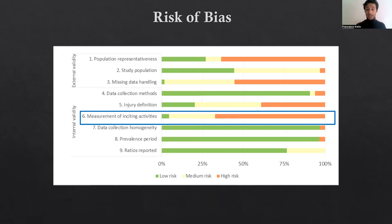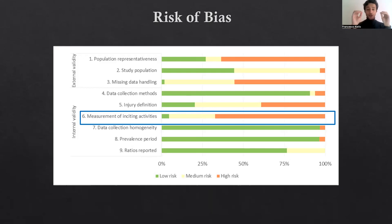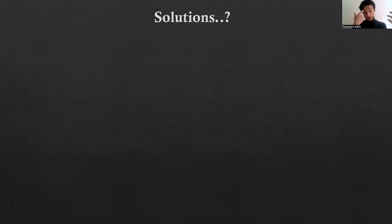The last and arguably main limitation in the included studies was the use of non-standardized systems to classify inciting activities. This led researchers to report data using arbitrary classifications, which is probably among the main causes of the large heterogeneity shown in the graphs. To give you an example, more than 100 different activities have been reported across different studies — more than 100. This is probably the biggest problem we identified.